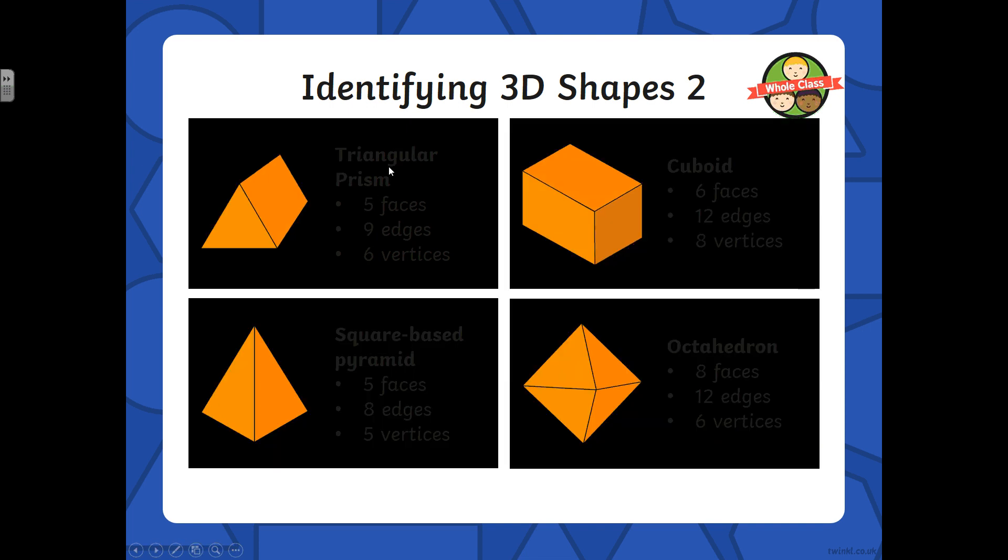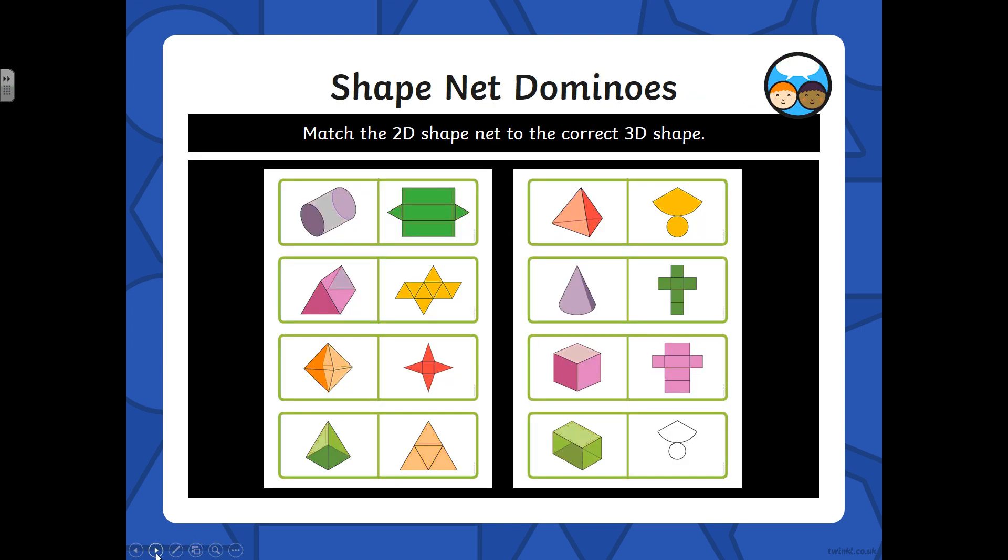Okay, it's gone all dark again. I don't know why. Hopefully you can see this. Triangular prism, cuboid, square base pyramid. In your maths book, you don't have to draw them, but could you make a little fact sheet for each of the 3D shapes?